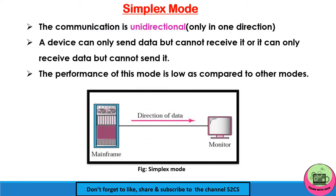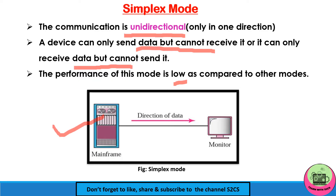The first one is the simplex mode. Here the communication is unidirectional, that means only in one direction. A device can only send data but cannot receive, or it can receive data but cannot send — it cannot send and receive simultaneously. The performance of this mode is low compared to other modes. With this figure you will be able to understand what simplex mode is about.